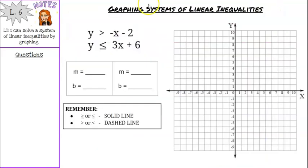Let's jump into some examples. We are going to graph our systems of linear inequalities. You have three colored pencils. Choose one color for the first inequality and box the inequality in that color. I'm going to use blue. This inequality is y is greater than negative x minus 2, or negative 1x minus 2.